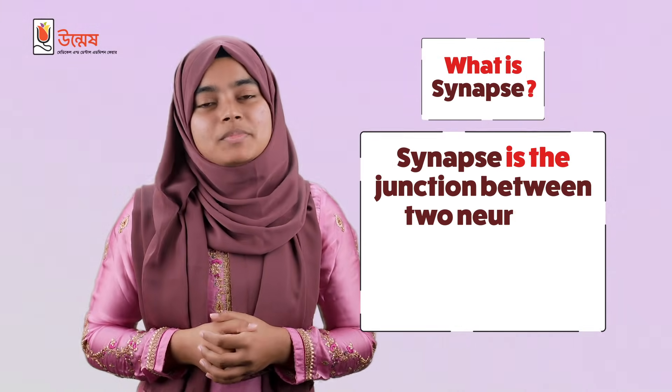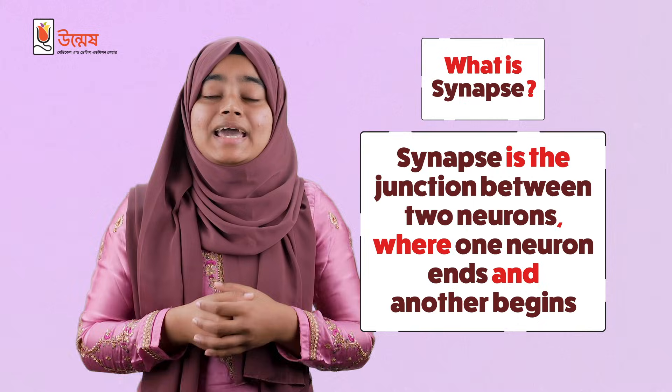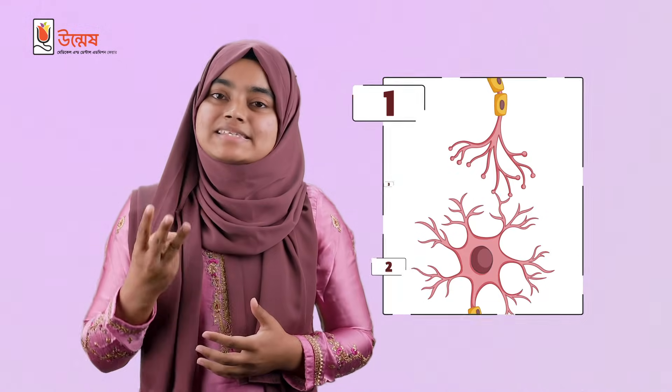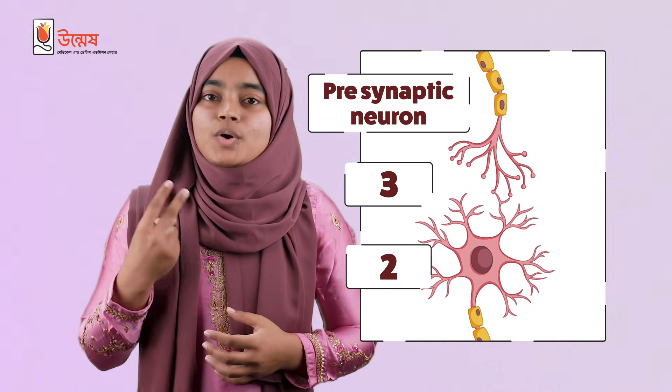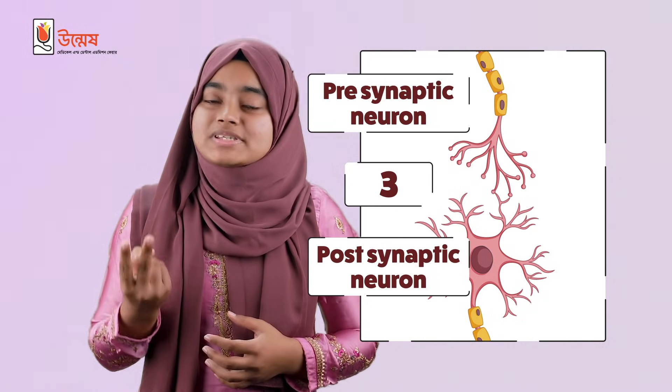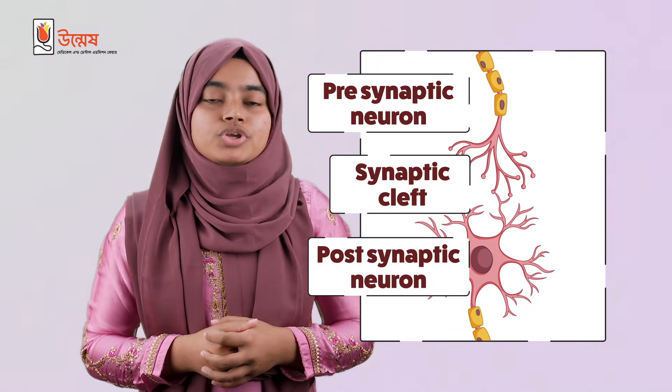For impulse transmission, our main goal is to transmit this action potential through the synapse to the postsynaptic neuron. A synapse is the junction between two neurons where one neuron ends and another begins. It has three components: the presynaptic neuron that sends impulse, the postsynaptic neuron that is going to receive impulse, and the synaptic cleft, which is the gap between two neurons.